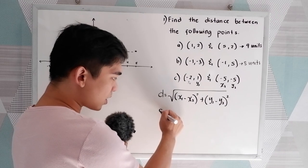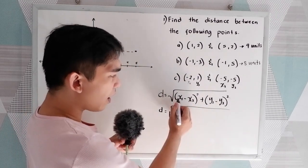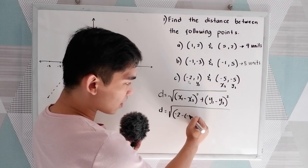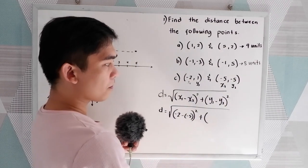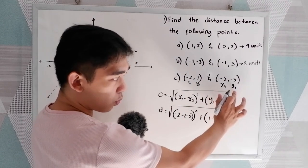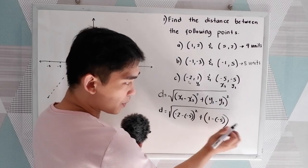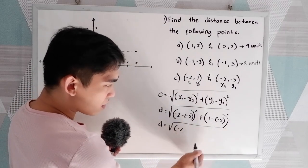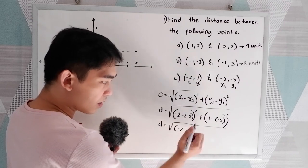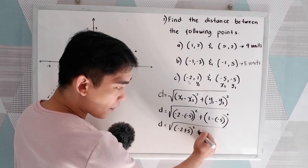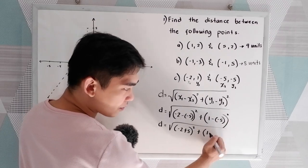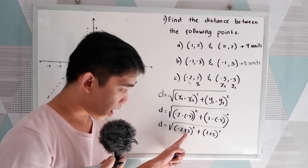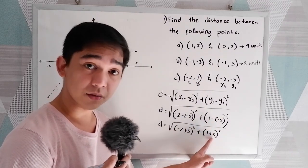Let's substitute. The distance is equal to the square root of (x₁ − x₂)², so negative 5 raised to 2, plus (y₁ − y₂)², where y₁ is 1 minus y₂ is negative 5. Don't forget your parentheses, raised to 2. So d equals the square root of — negative 2 minus negative 5: negative times negative becomes positive 5, raised to 2, plus 1 minus negative 5: negative times negative becomes positive 5, raised to 2.